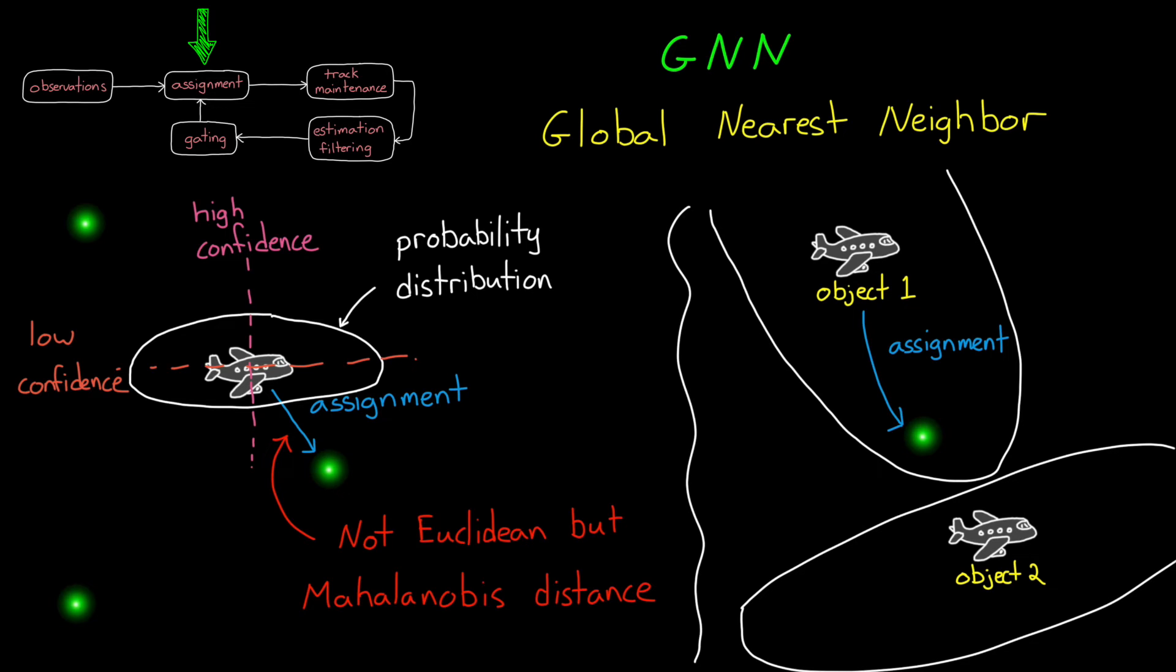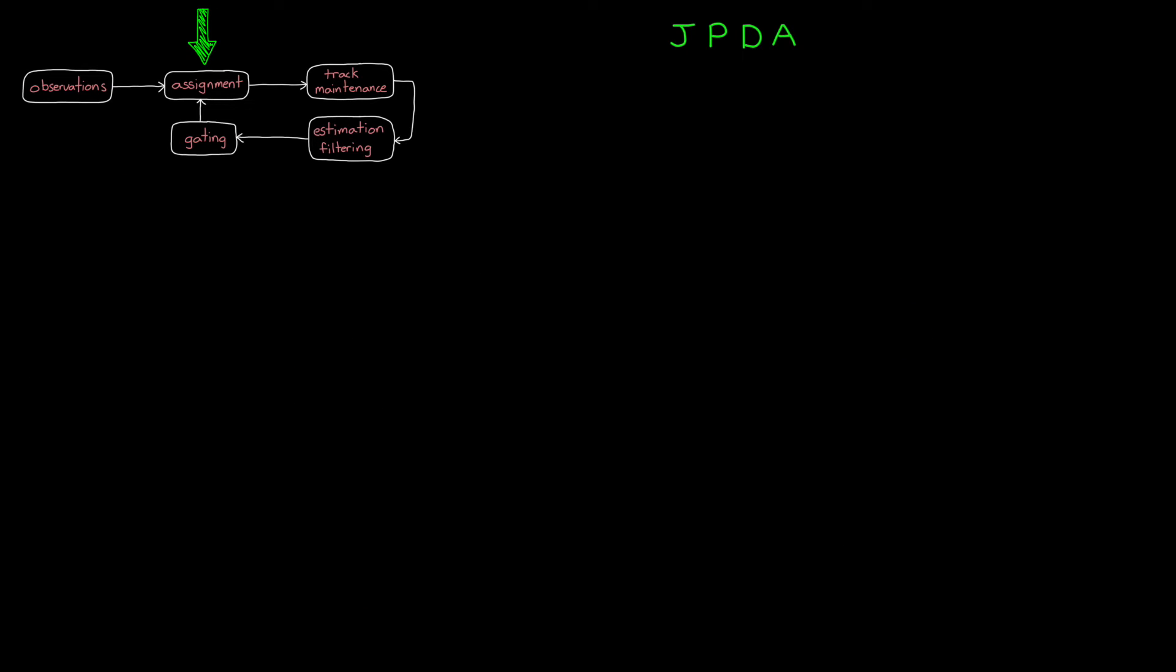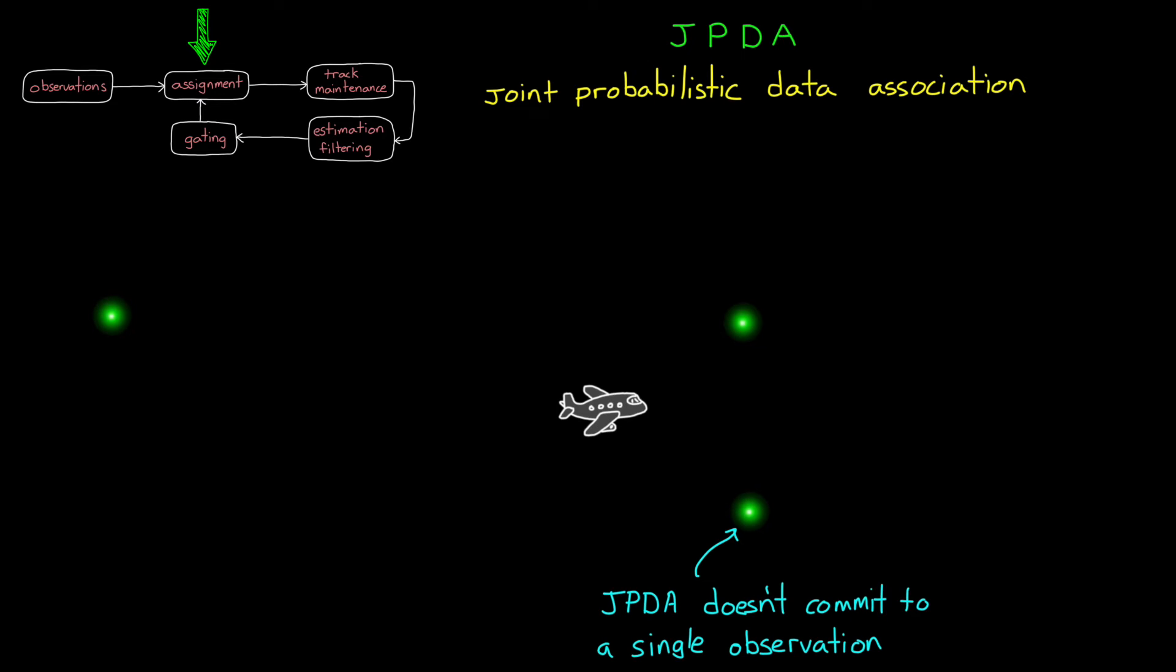Now GNN works well for sparsely distributed objects. But for cluttered objects, another assignment algorithm like the JPDA, or Joint Probabilistic Data Association algorithm will be better. The JPDA doesn't make a hard assignment between one observation and one track. Instead, it makes a weighted combination of all of the neighboring observations, with closer observations being weighted higher than further ones.